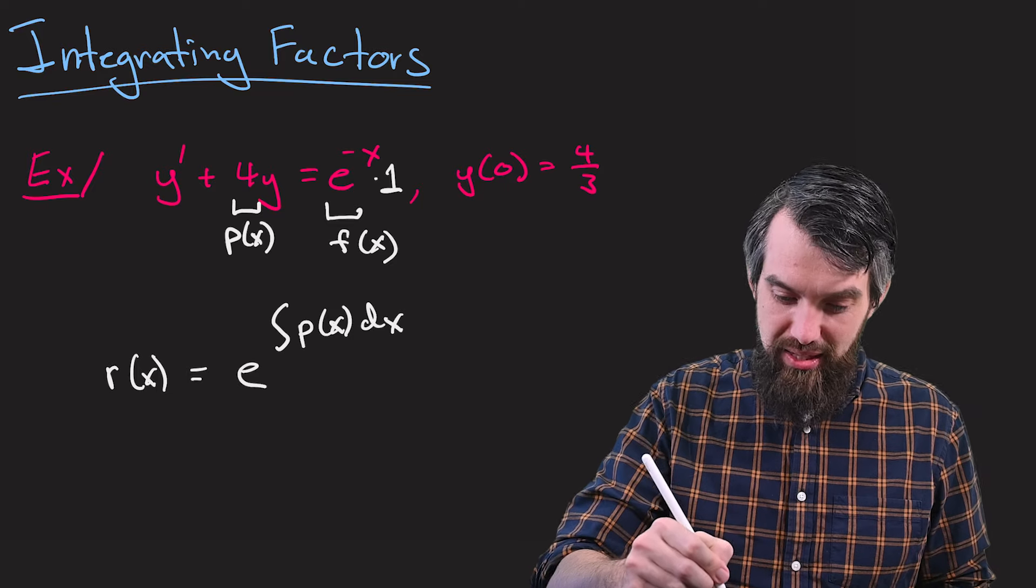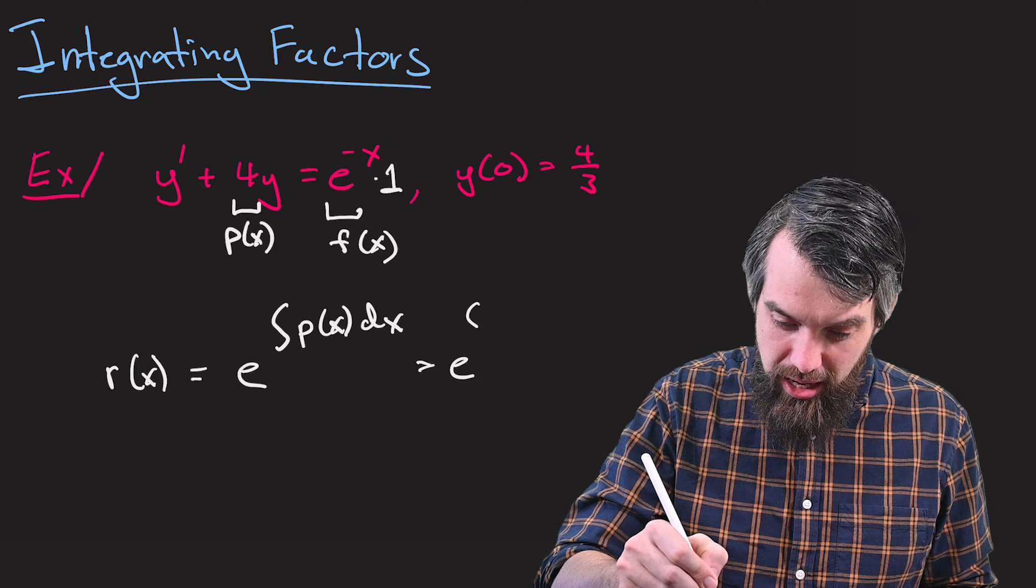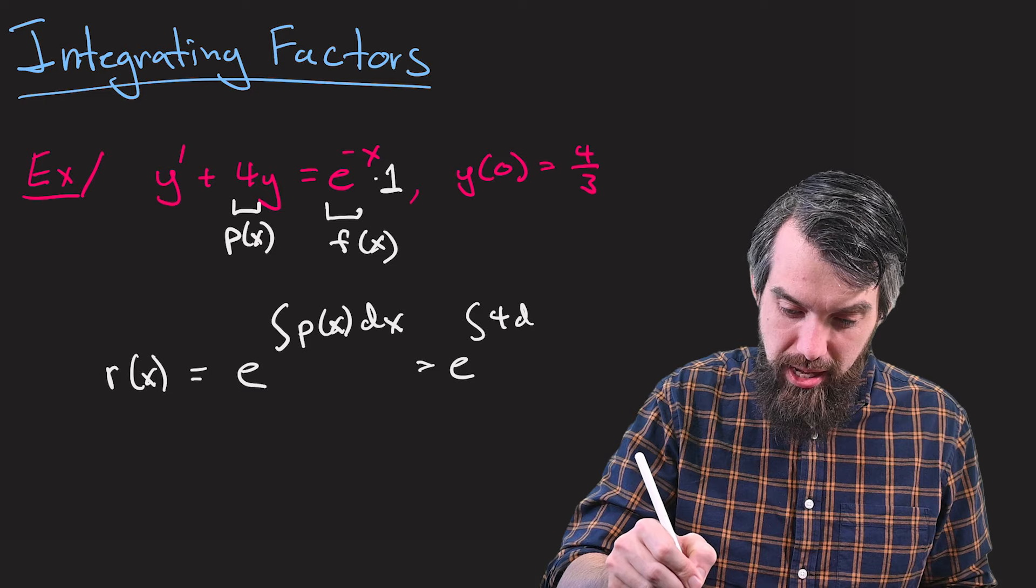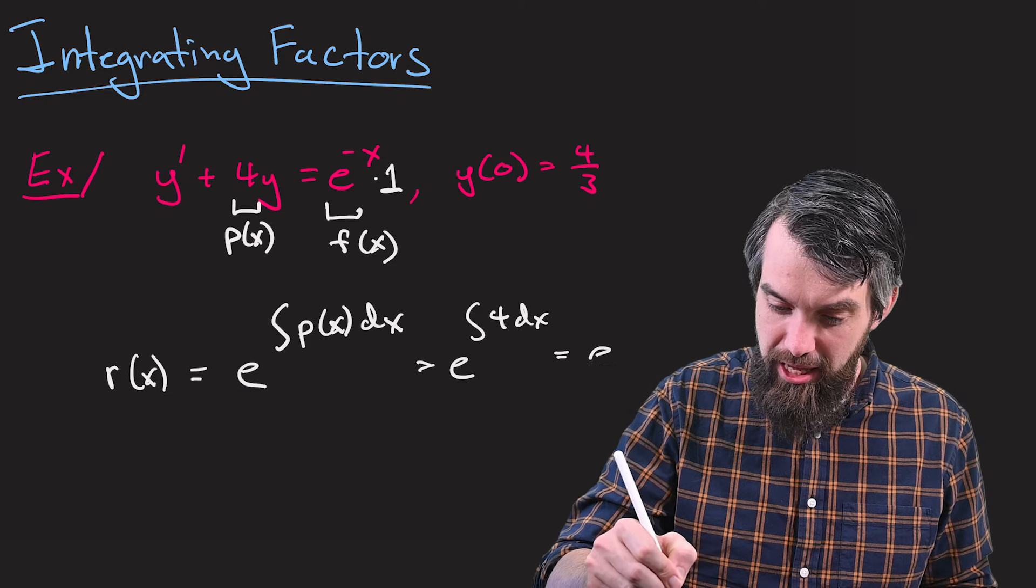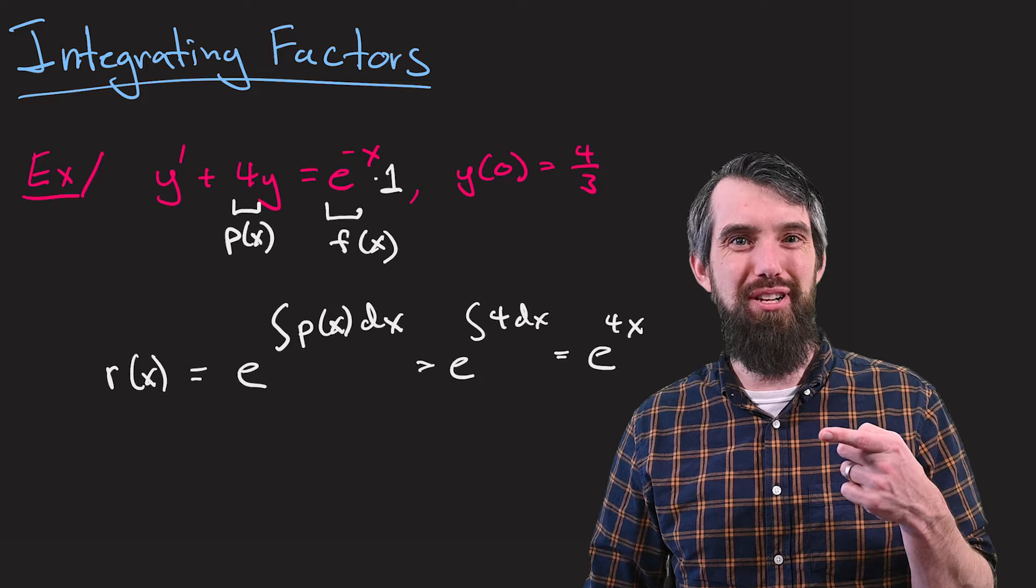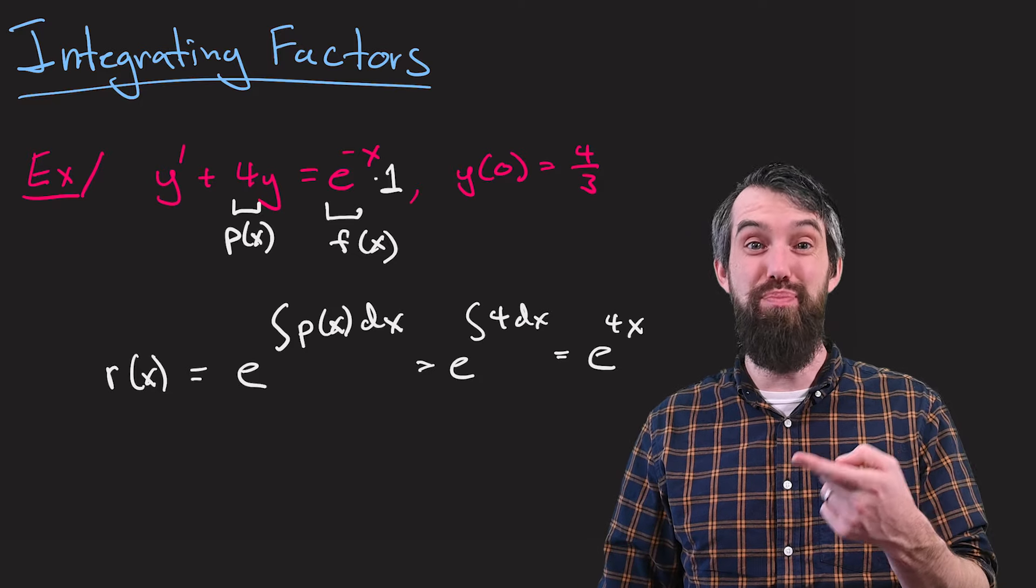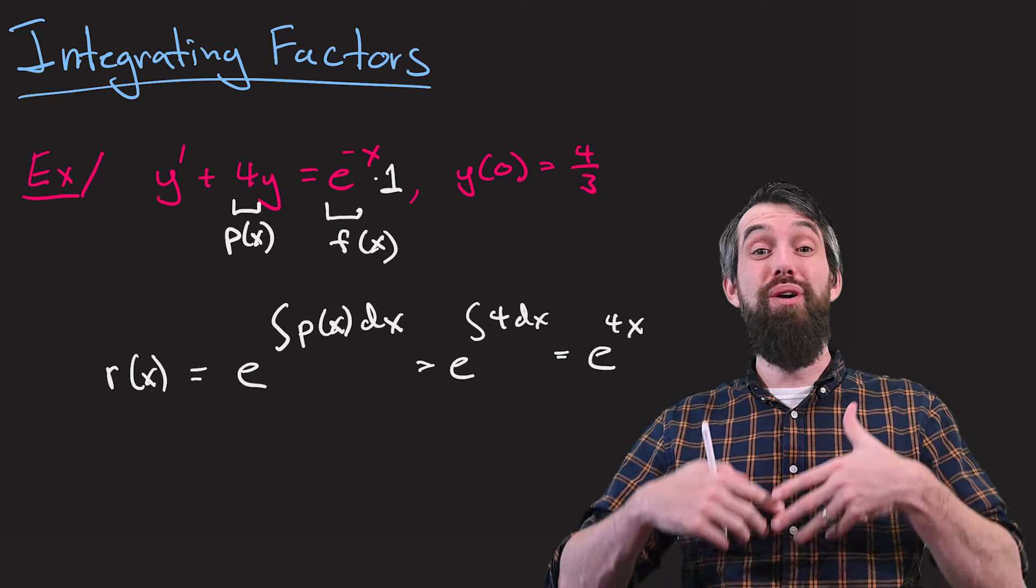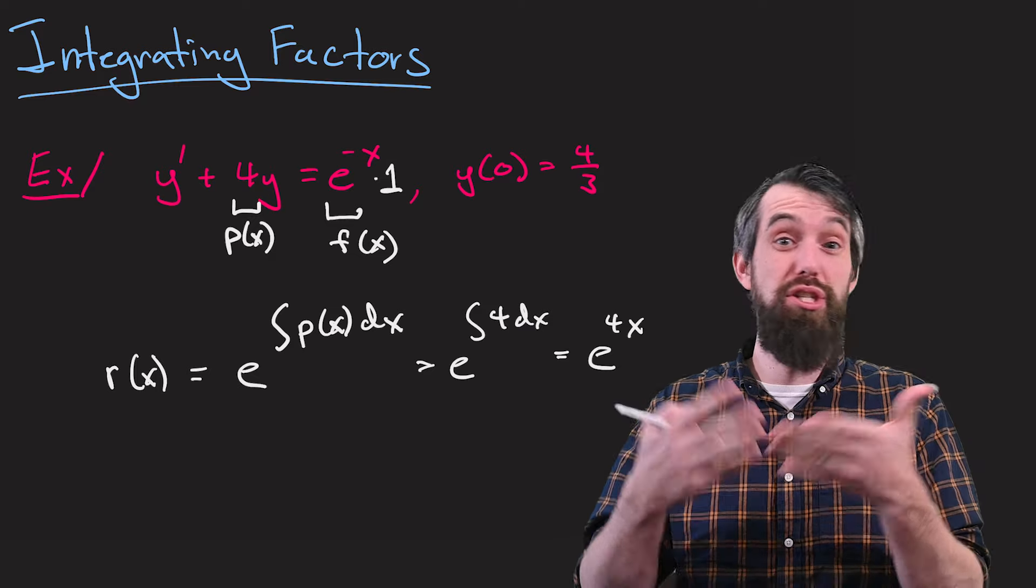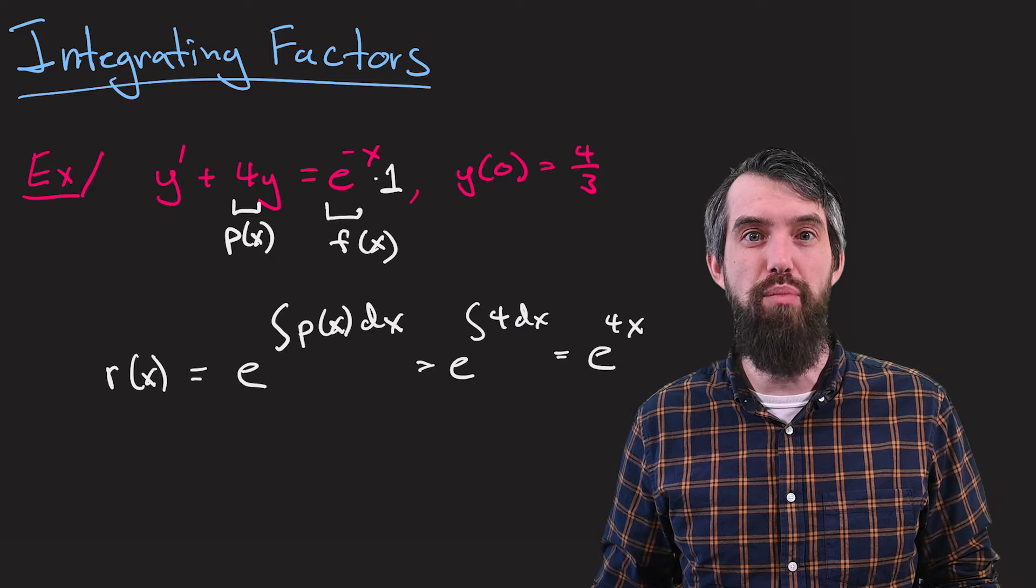Okay, so in this case, that's the same thing as saying e to the integral of 4 dx, which is the same thing as saying e to the 4x. You might notice it's an indefinite integral, so you might have wanted to put a plus C. We're just looking for any integrating factor that works, so we'll just choose arbitrarily that C is equal to 0.